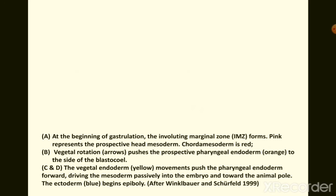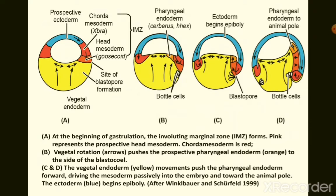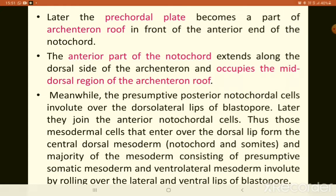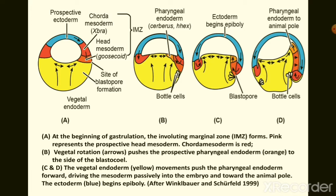Meanwhile, the blastopore lip extends laterally, forming lateral lips. At the beginning of gastrulation, the involuting marginal zone includes the prospective head mesoderm region and the chorda-mesoderm. The pharyngeal endoderm moves forward, driving the mesoderm passively toward the animal pole, while the ectoderm begins to stretch to cover the whole embryo through the process of epiboly.